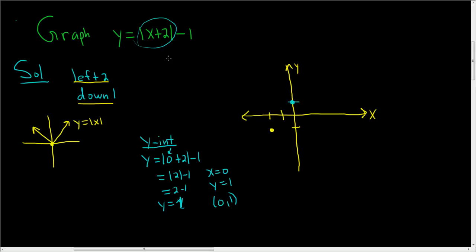Now let's go ahead and find the x-intercepts. Again, to find any intercept, you set the other one equal to 0. So in this case, we set y equal to 0. So we have 0 is equal to the absolute value of x plus 2 minus 1. If we add 1 to both sides, we get 1 is equal to the absolute value of x plus 2.